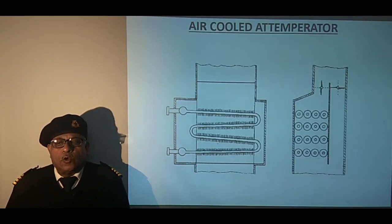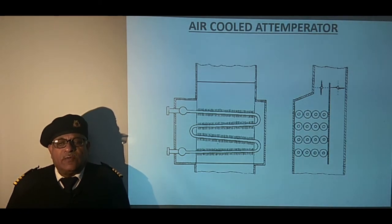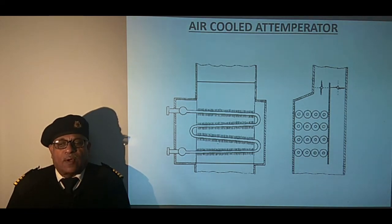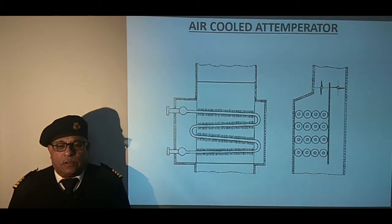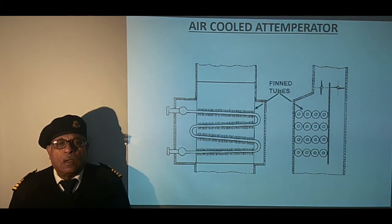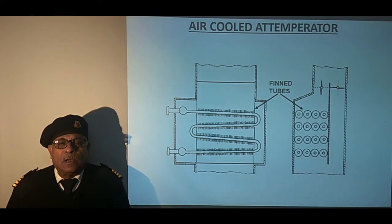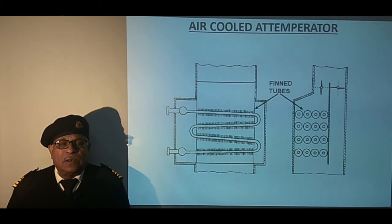This sketch shows an air-cooled attemperator used on Foster Wheeler ESD1 type boiler. Let us first see the components of the attemperator and the flow of combustion air and steam through it. We can see the fin tubes shown in the diagram — one view is taken from the front as section one, and the other is from the side.